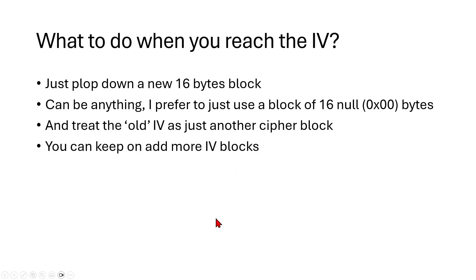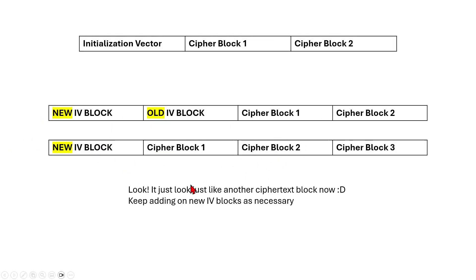When you reach the IV, just place a new 16-byte block — it can be anything; I prefer a block of 16 null bytes — and treat the old IV as just another cipher block, keeping on adding more IV blocks as needed. So originally you have: IV, cipher block 1, cipher block 2. Now you just place a new IV block at the front. Notice how it looks just like another ciphertext block — it's the same structure, just with one more block prepended.